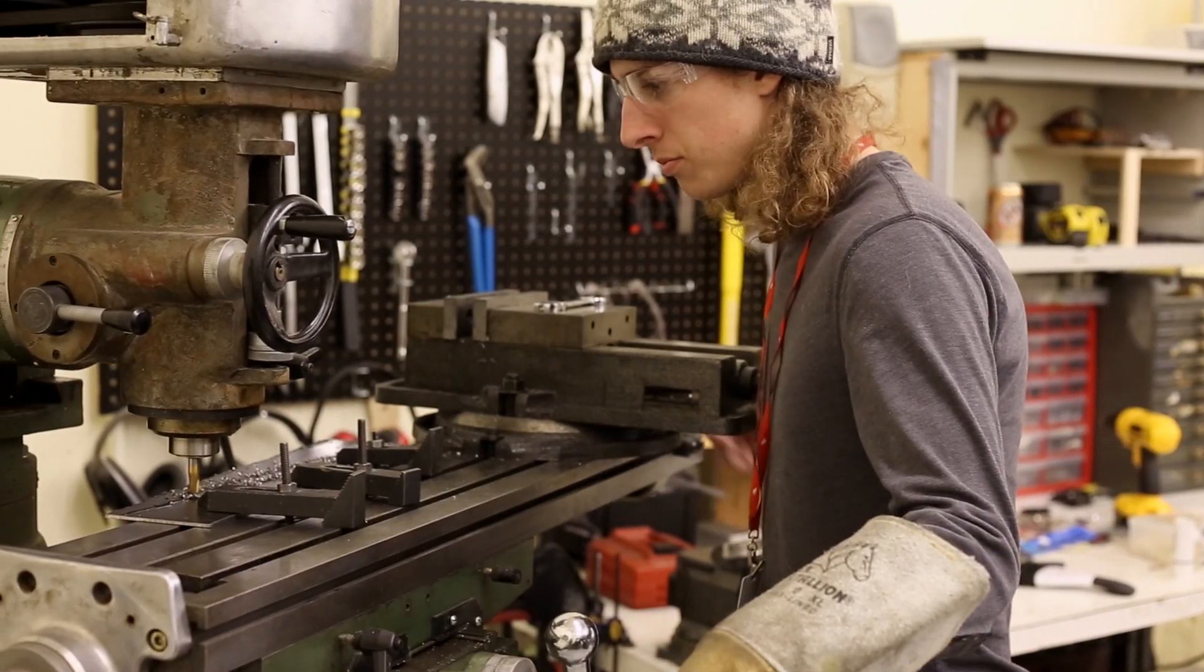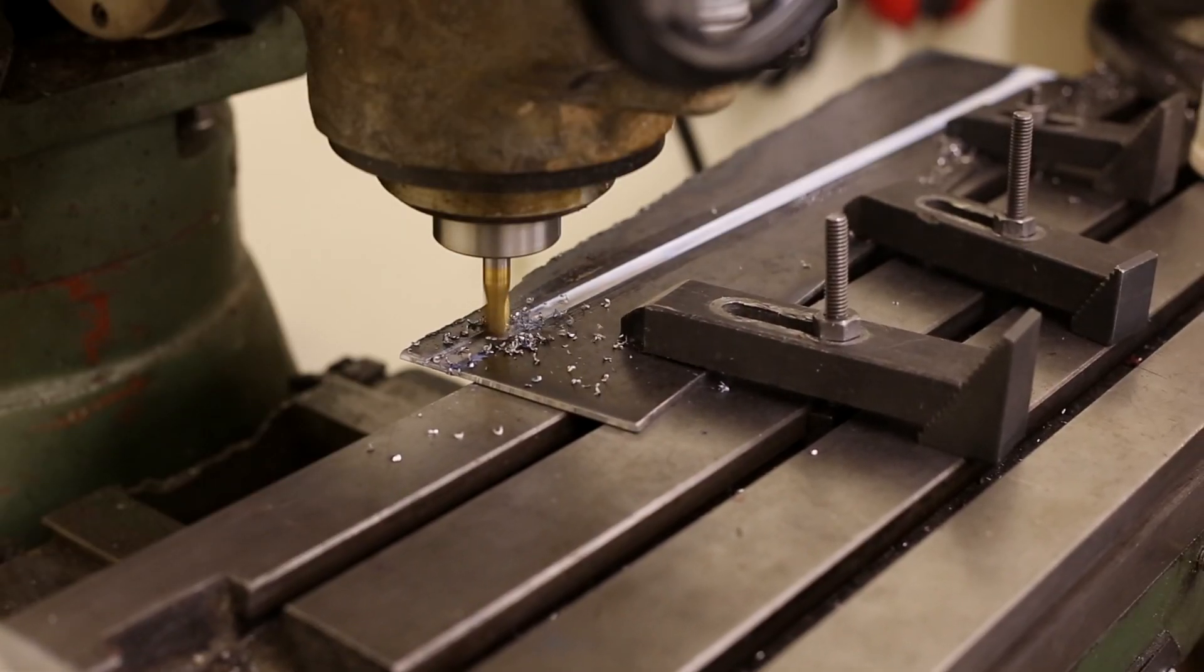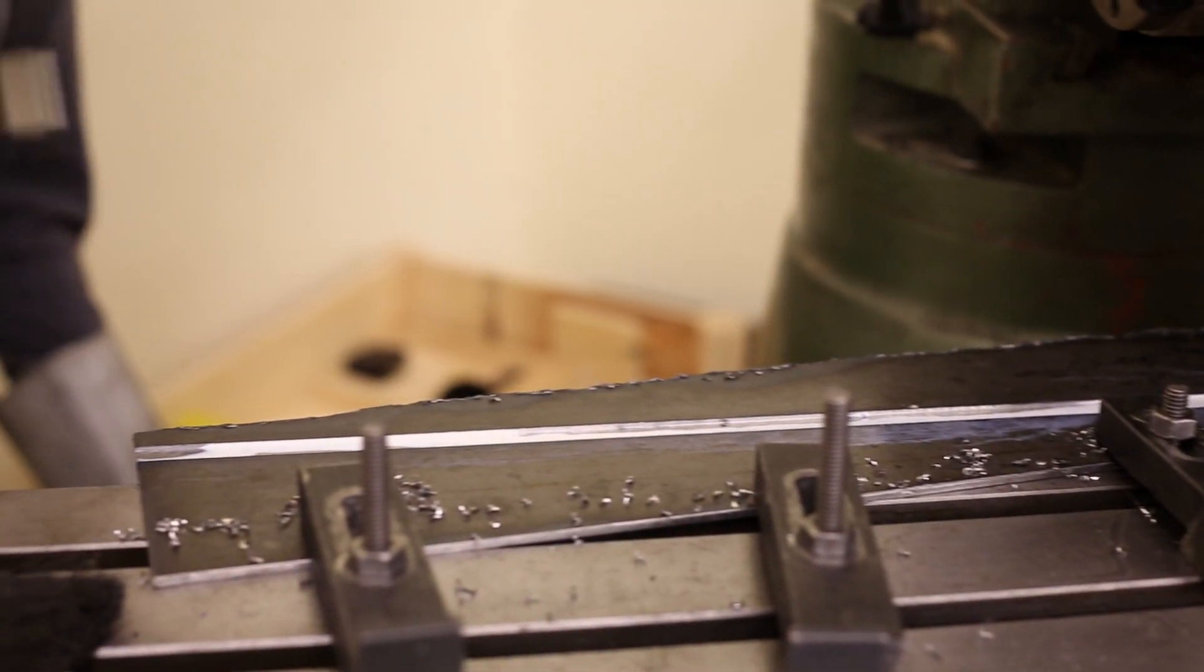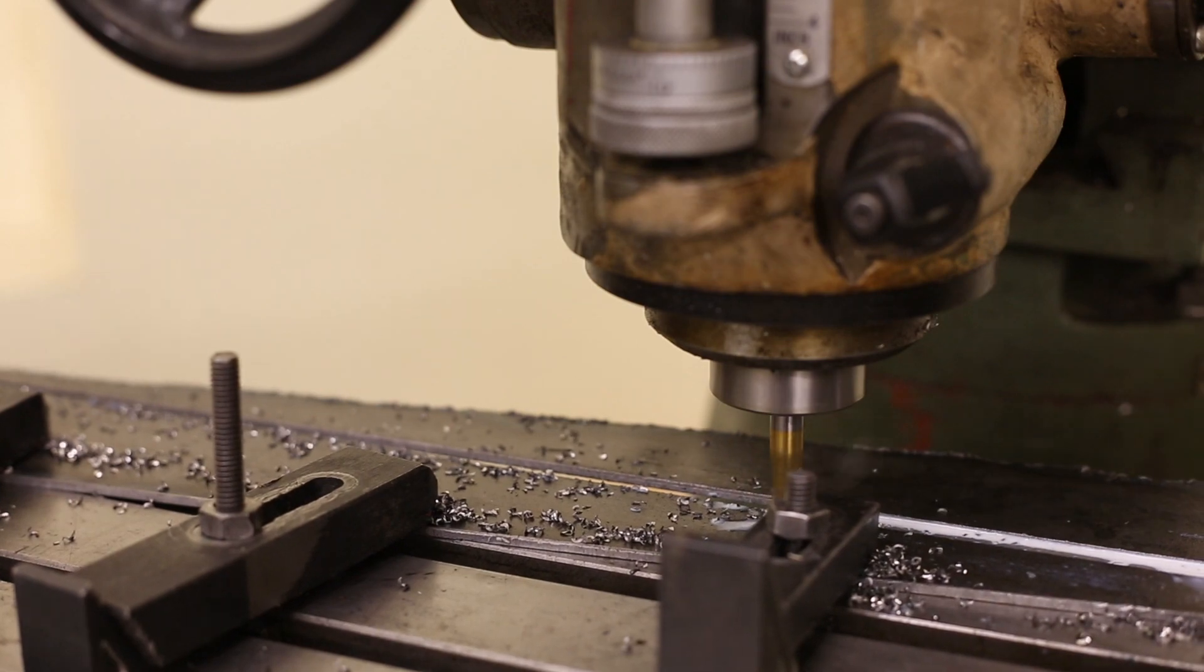The other nice thing about metal is the ease of machinability. With metal and the proper tools you can get very precise cuts and very precise parts out of metal. Whereas something like wood you can use basic hand tools to cut it and to carve it and to shape it but your precision is never really going to be there.